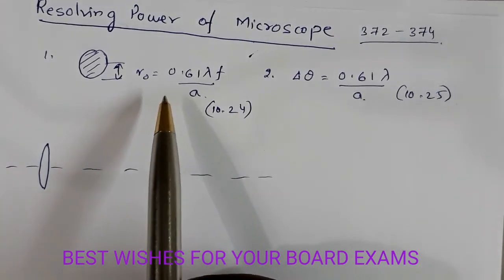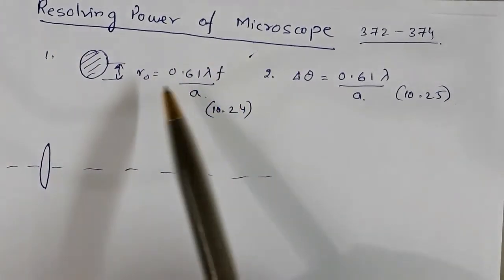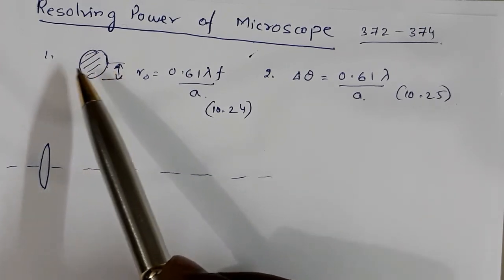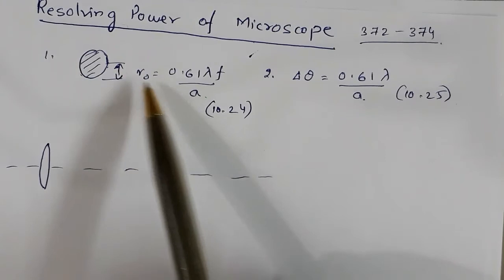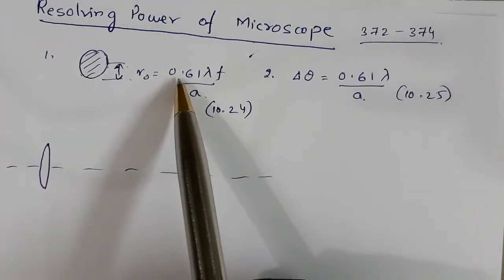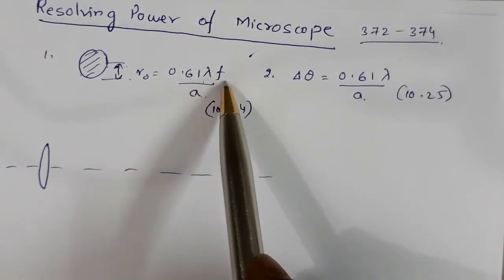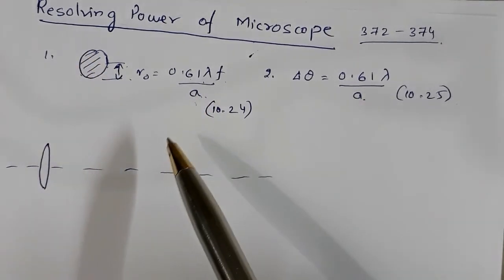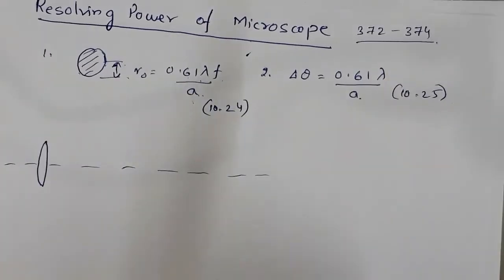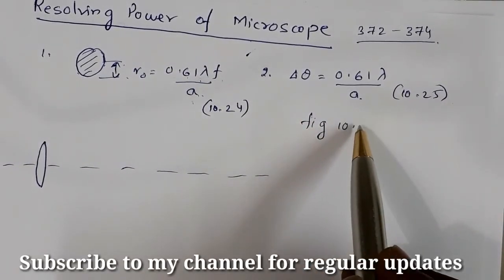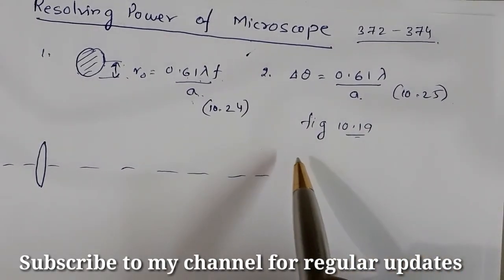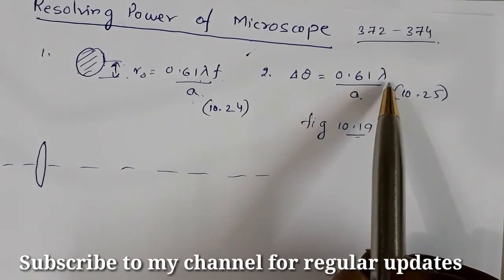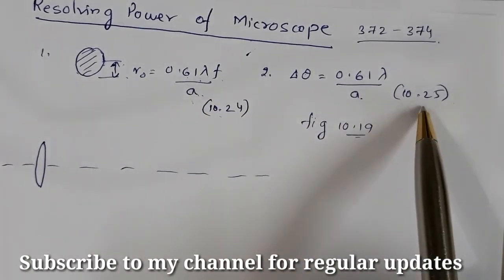I'll be using two previous results to obtain the expression for resolving power of microscope. The first result is in diffraction: the radius of the central maxima, for light passing through a lens, is 0.61λf/a, where λ is the wavelength of light, f is the focal length, and 2a is the aperture of the convex lens — this is from figure 10.19. The angle of resolution δθ = 0.61λ/a, which is equation 10.24 and 10.25 from the textbook.